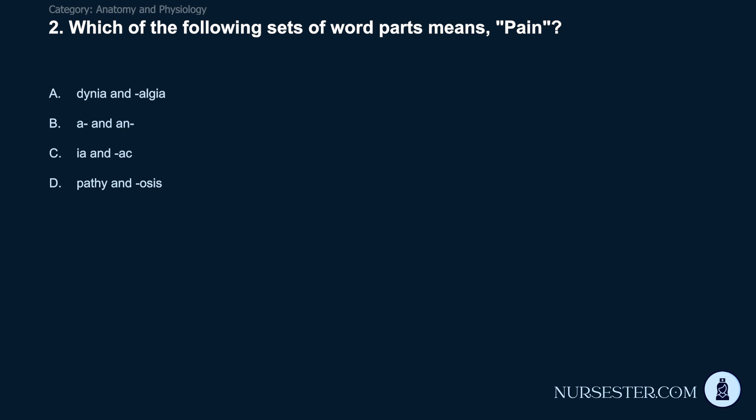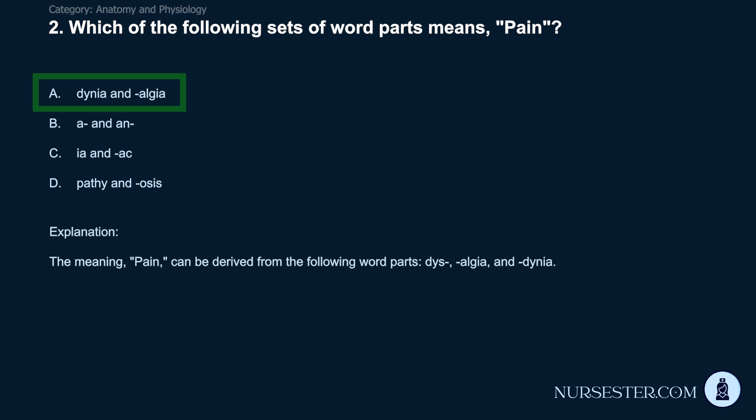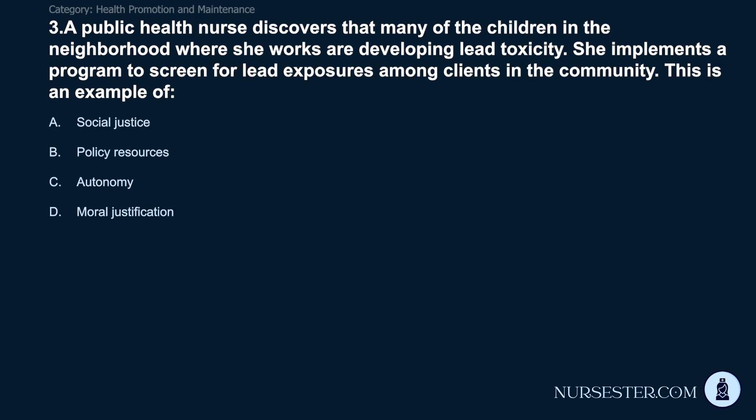Question 2: Which of the following sets of word parts means pain? A) dynia and algia. B) a- and -and. C) -ia and -ac. D) -pathy and -osis. Correct answer: A. dynia and algia. The meaning pain can be derived from the word parts -algia and -dynia.